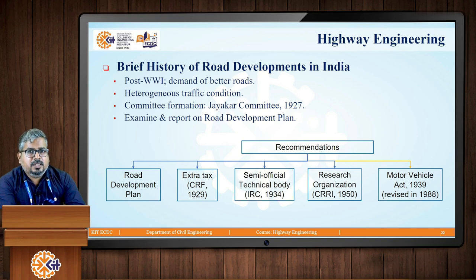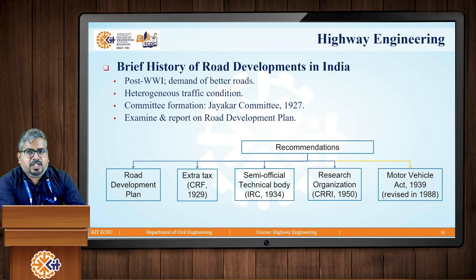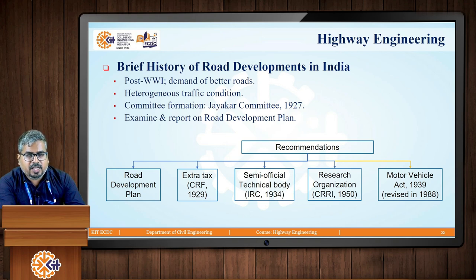There were four key recommendations from the Jaikar Committee: first, a road development plan; second, an extra tax in the form of a Central Road Fund in 1929; third, the establishment of a semi-official technical body — the Indian Roads Congress (IRC) — in 1934; and fourth, a research organization, the Central Road Research Institute (CRRI), situated in Delhi, started in 1950. Additionally, a Motor Vehicle Act was introduced in 1939 and later revised in 1988. The main aim of this act was to state that vehicles can be driven only by persons aged 18 or above.